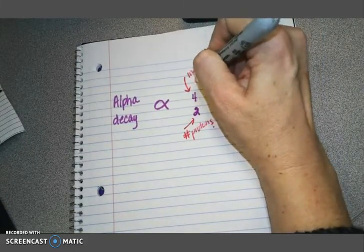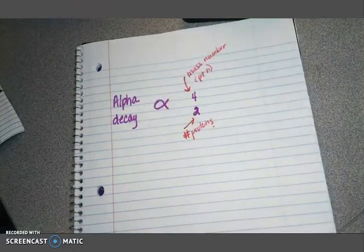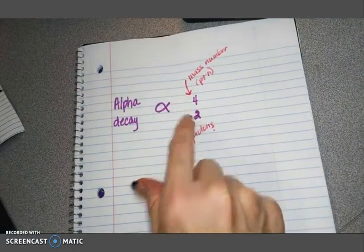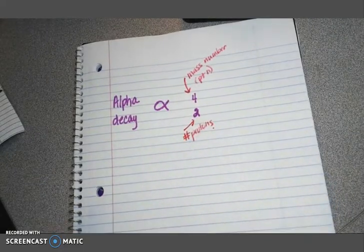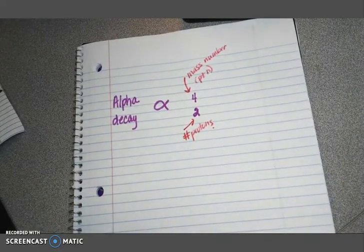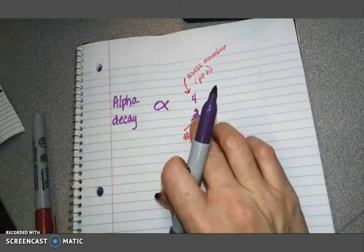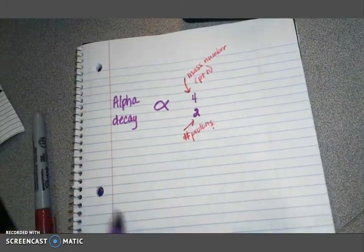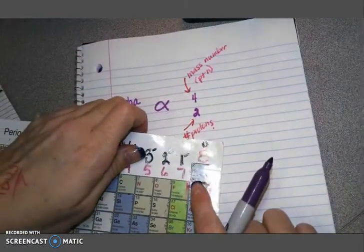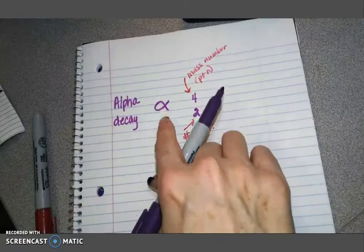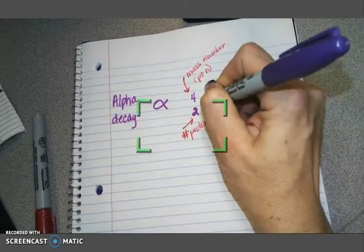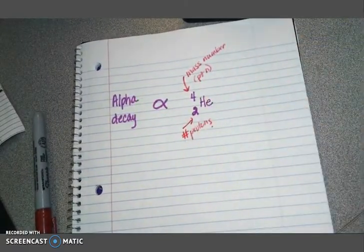This is protons plus neutrons. So an alpha particle that has four and two, if you look at that, there is one element on the periodic table that has an atomic number of two and a mass number of roughly four, and that's helium. So an alpha particle is essentially a helium atom is what it is.